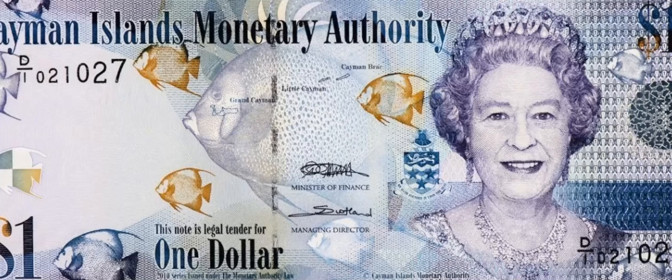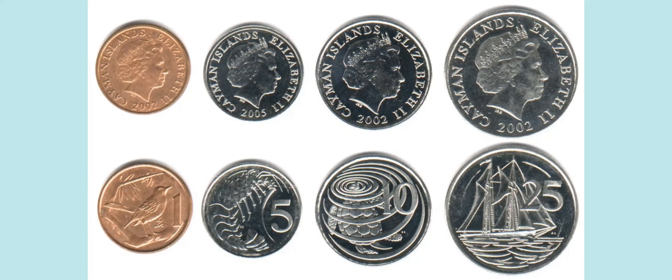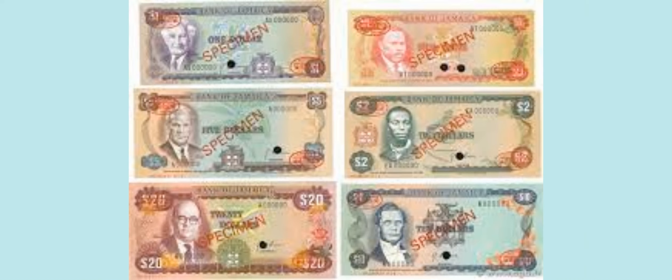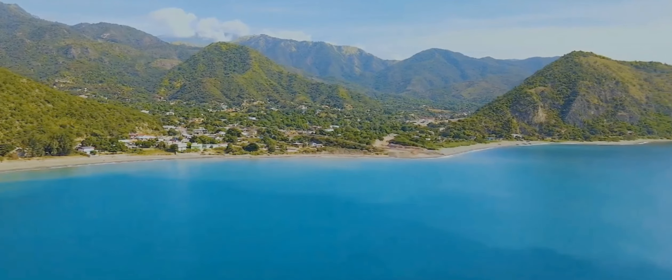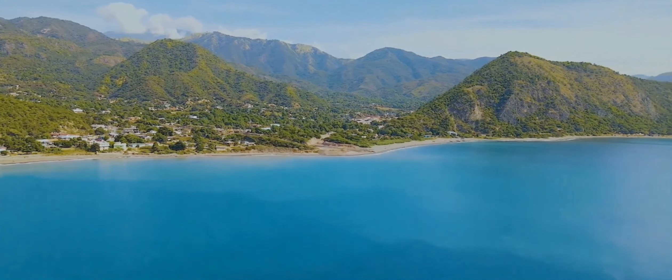About Cayman Islands currency: the Cayman Islands dollar (KYD) is the island's official currency and the world's seventh most valuable currency. The Cayman Islands dollar replaced the Jamaican dollar at par in 1972. The Jamaican currency was legal tender in the Cayman Islands until August 1st, 1972.